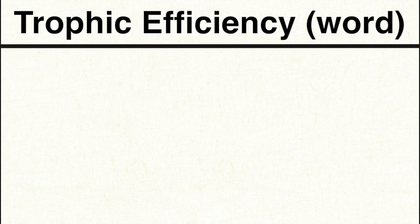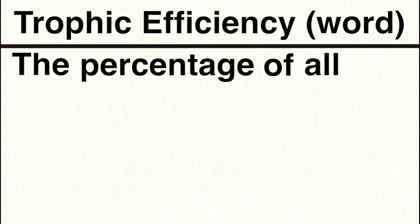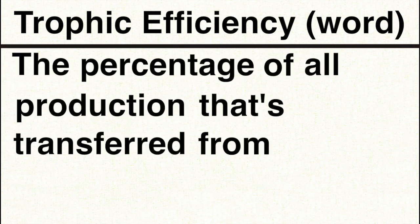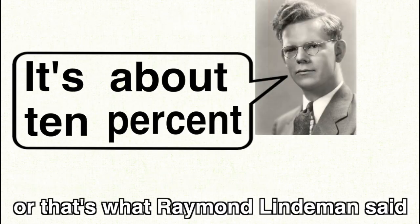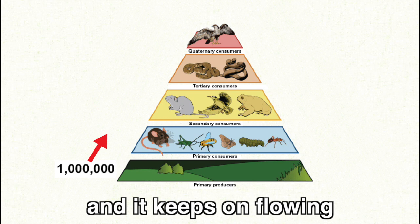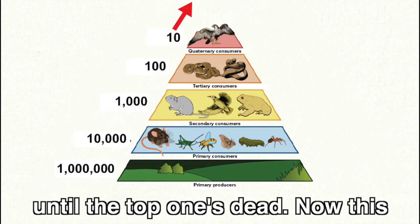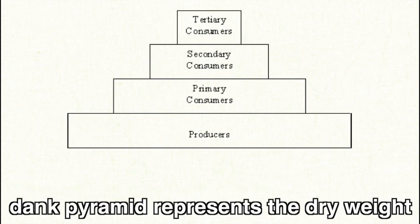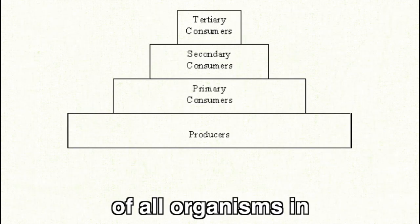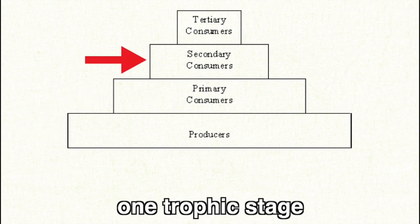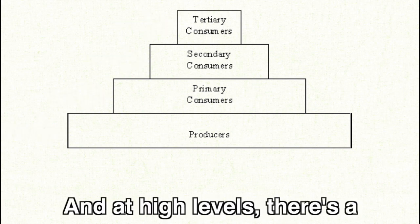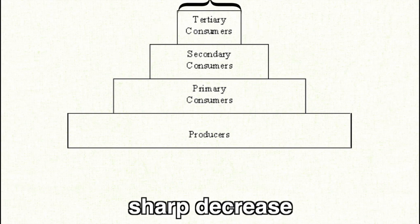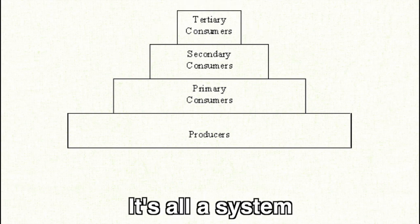Trophic efficiency is the percentage of all production that's transferred from one level to the next — it's about 10%, that's what Raymond Lindeman said. And it keeps on flowing until the top one's dead. This biomass pyramid represents the dry weight of all organisms in one trophic stage, and at higher levels there's a sharp decrease. It's all a system.